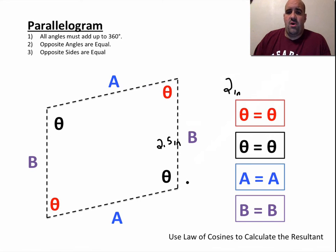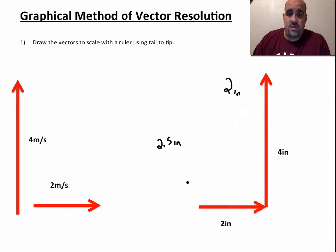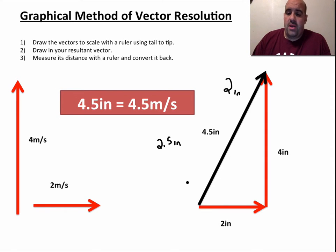We went through three methods of vector resolution. As noted, our moneymaker is going to be the tail-to-tip method, whereby you take one vector and connect the tail of the other vector to the tip of it, and your resultant goes from tail-to-tip. This would be our best method of adding and subtracting vectors. We're going to use that.